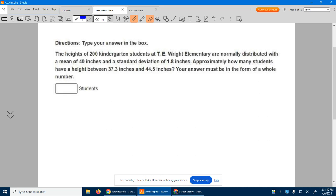All right, so this is an interesting question. We have the heights of 200 little kitties at T.E. Wright Elementary. They're normally distributed. So remember, that means we have a nice bell-shaped curve here.